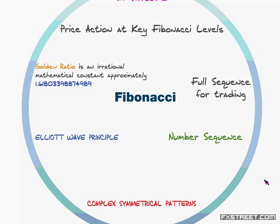Key things we're going to talk about today: Fibonacci can be found in nature. We're going to talk about different price action, what I look for at key Fib levels, the golden ratio, and the full sequence for trading — not just in Elliott Wave but also in complex symmetrical patterns.